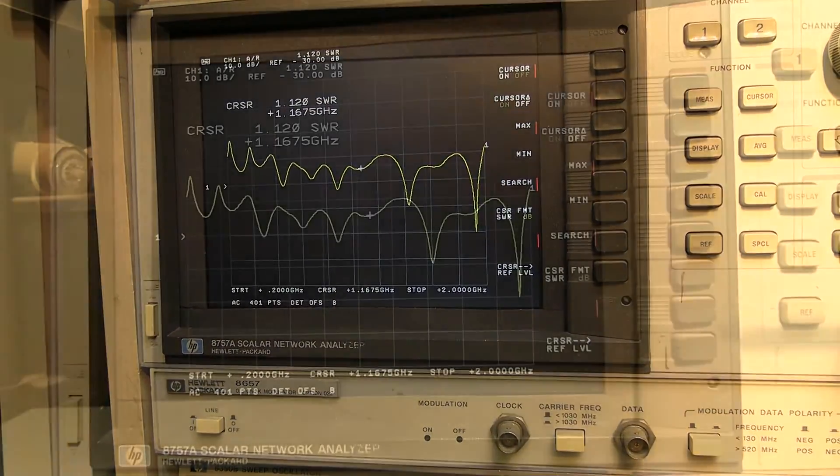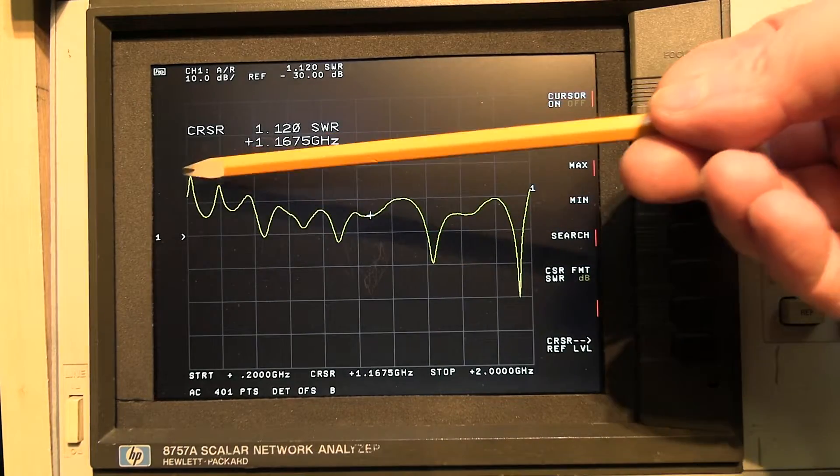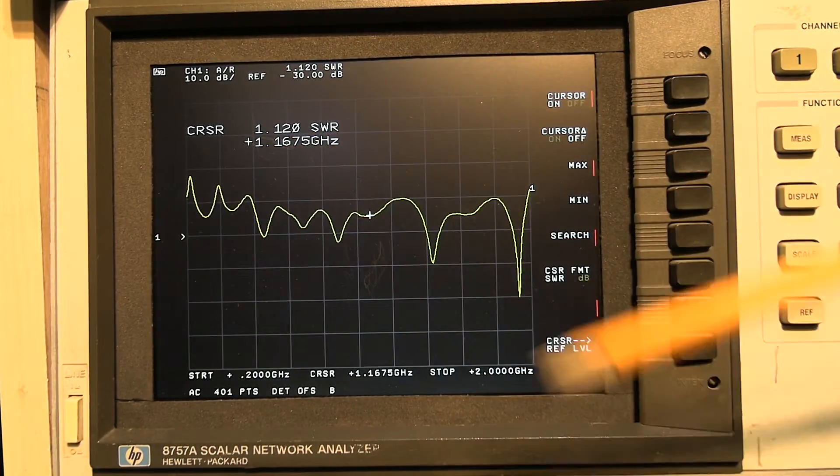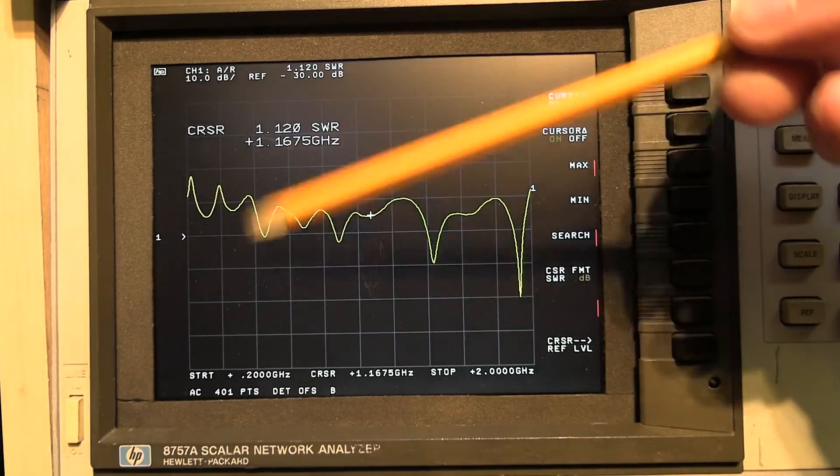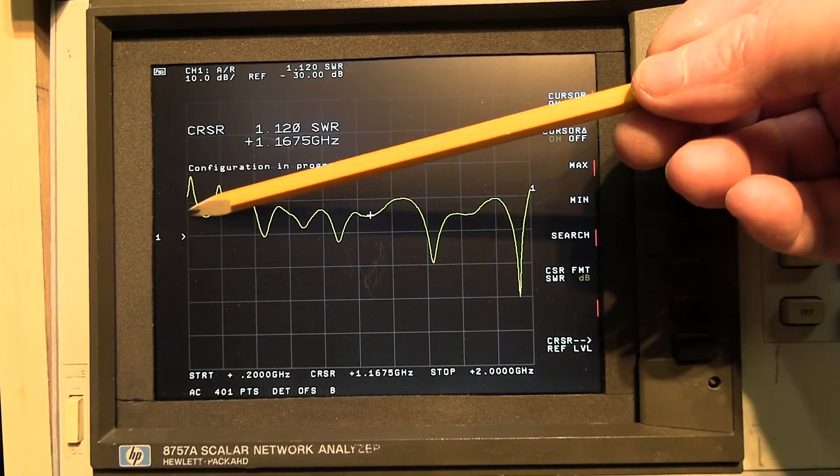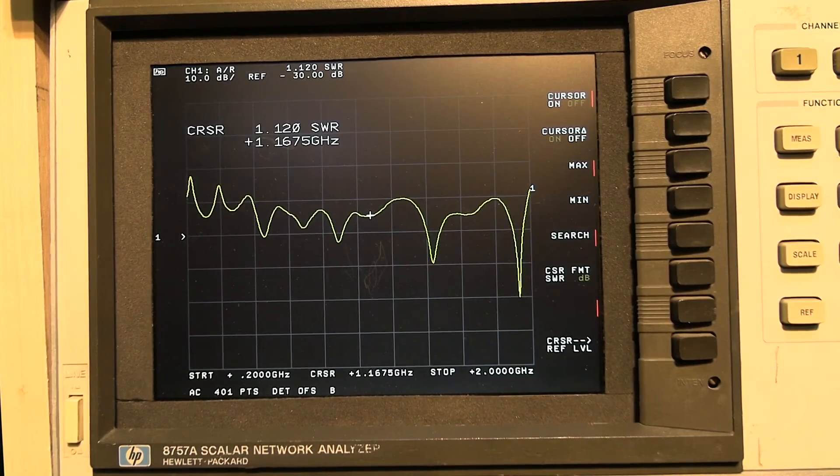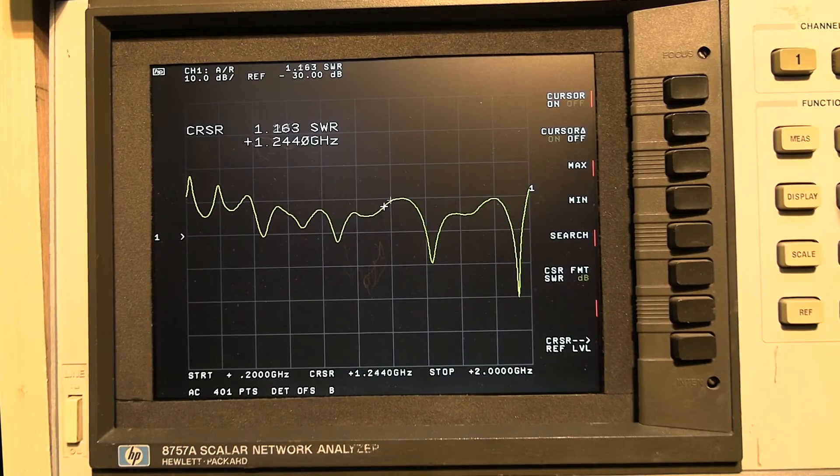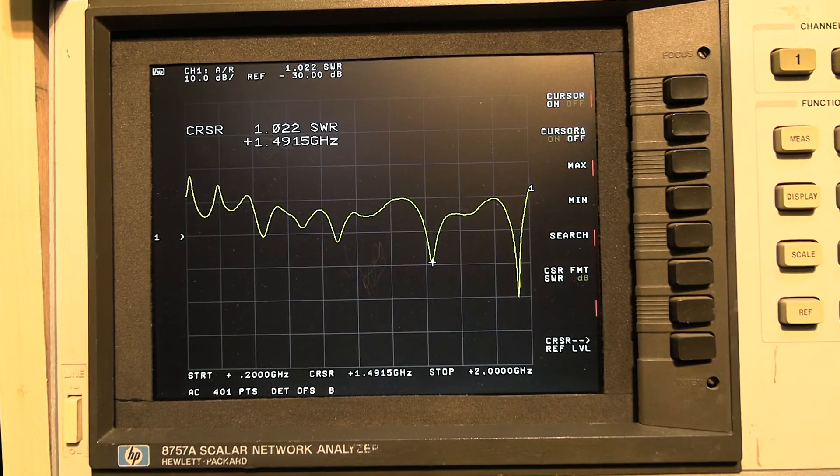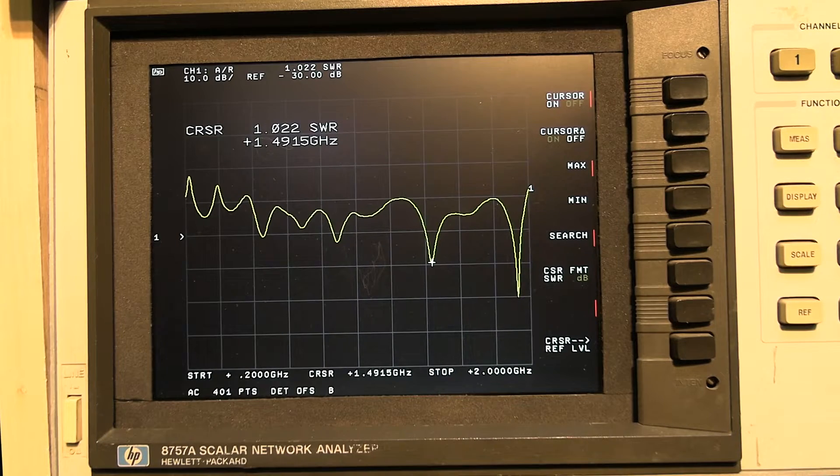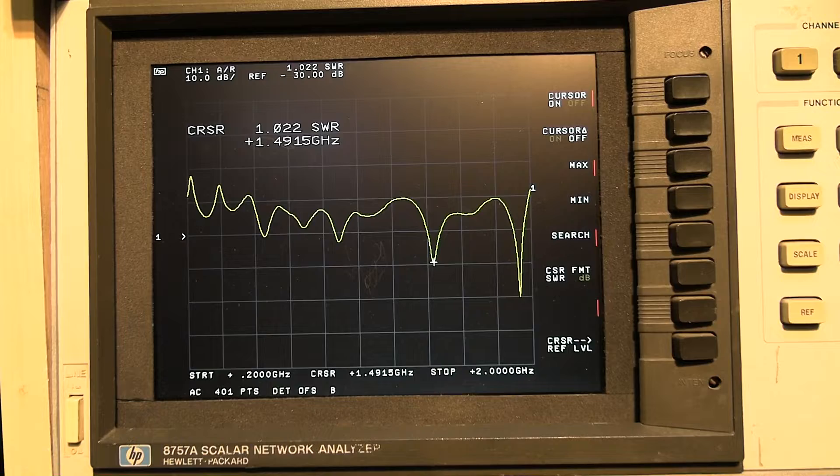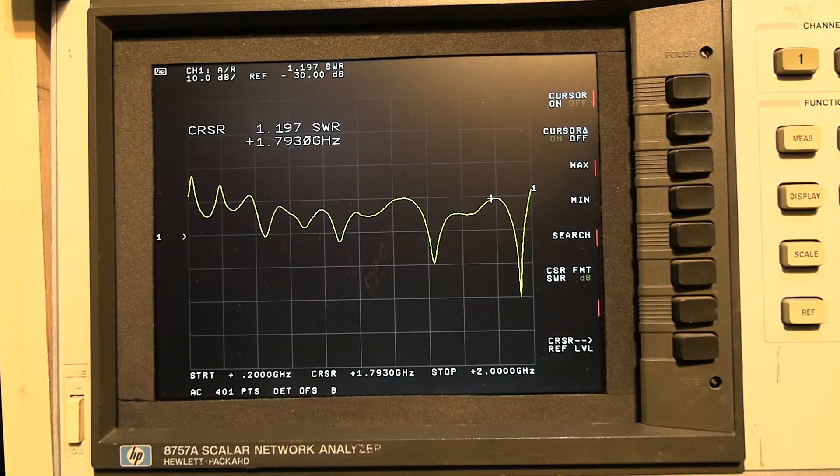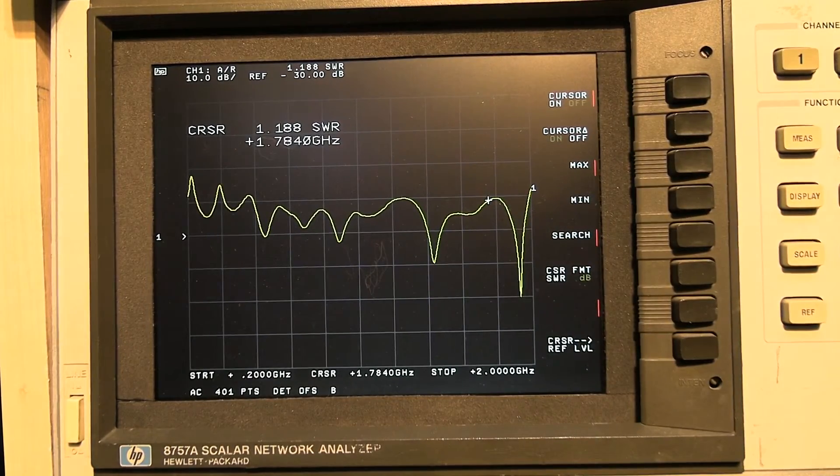Here we are on the network analyzer. I'm scanning from 200 megahertz to 2 gigahertz. I did have it set to 10 megahertz starting point but there was nothing to see there, just a lot of noise. These two areas look interesting. This small dip here we're getting a reasonable return loss at 1.49 gigahertz, and then this really nice one at almost 2 gigahertz, 1.937 gigahertz. That's a nice low return loss.